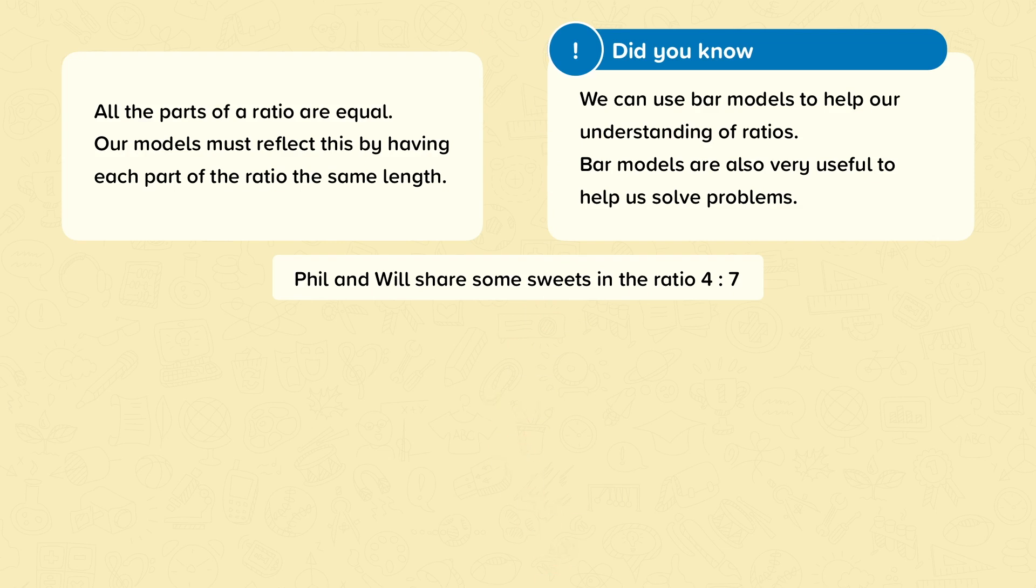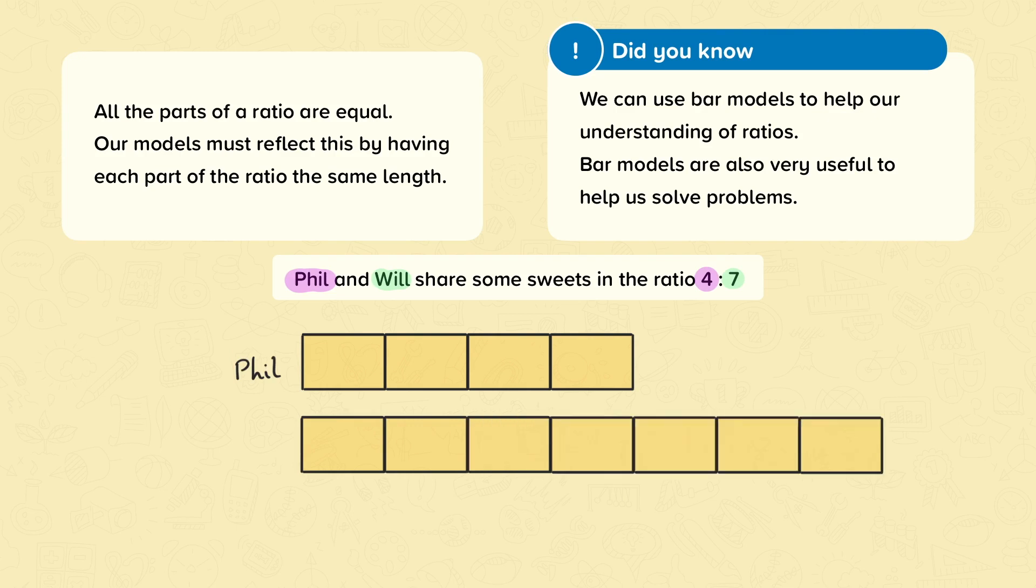Here's how it's done. Phil is first, so he gets the first number in the ratio. Phil has four parts. Will has seven parts. We draw four bars for Phil and label it as Phil. We draw seven bars for Will and label it as Will. And that's our ratio modelled. Well done if you drew a ratio like this.